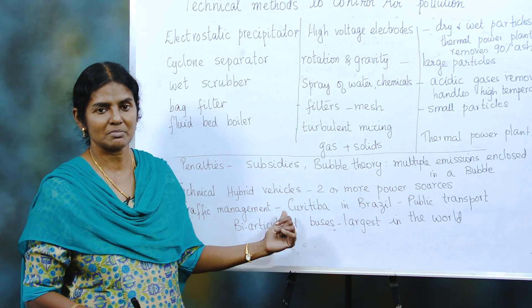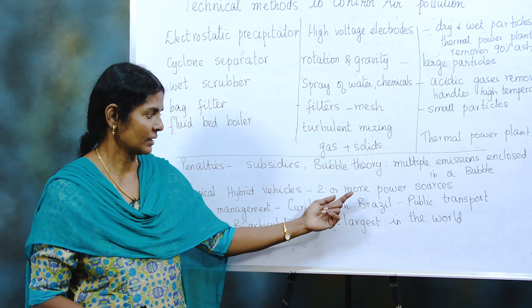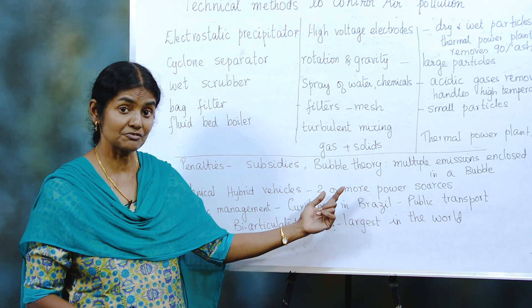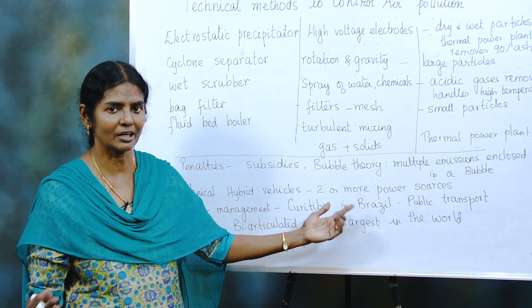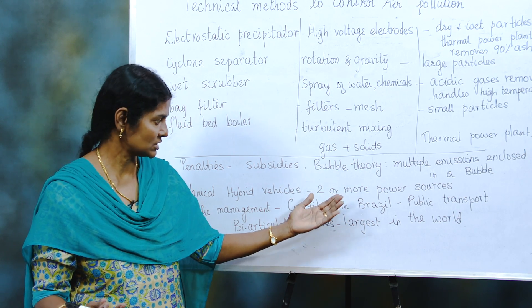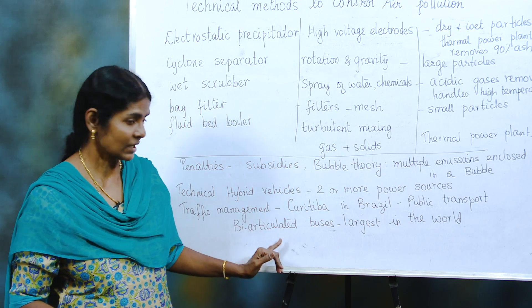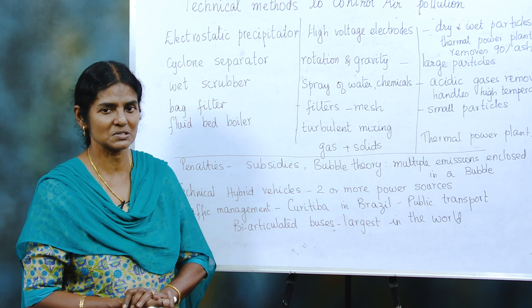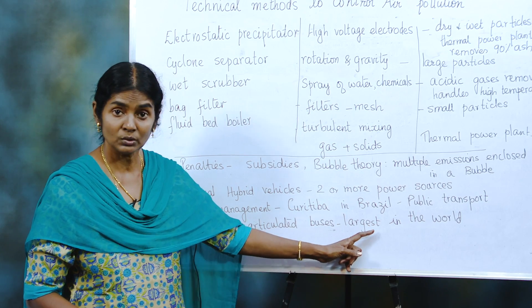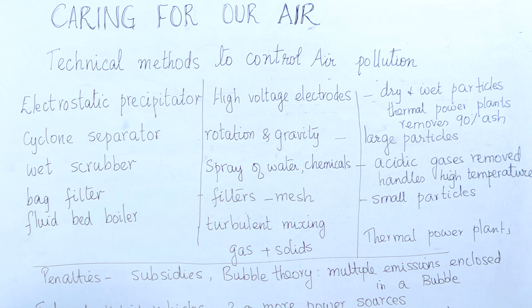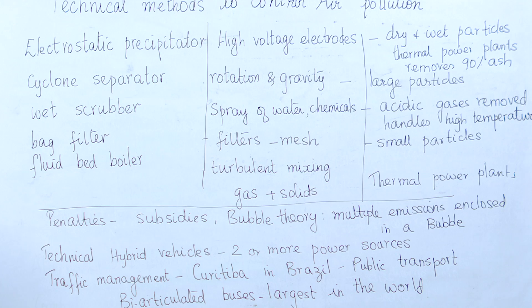Next is traffic management. The best role model is Curitiba, a city in Brazil. They started planning this in 1965, and till now, despite population growth, they don't find any problem with transport. It is the best role model for public transport — so integrated and planned. It has five arterial roads and biarticulated buses, the largest in the world, which can transport 270 passengers at a time.